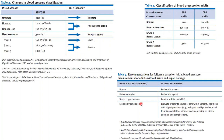Regarding checkup recommendations — for a normal adult without end organ damage, blood pressure should be rechecked within two years. Pre-hypertension should be rechecked every one year. Stage 1 hypertension should be confirmed within two months to see whether the patient has modified lifestyle.